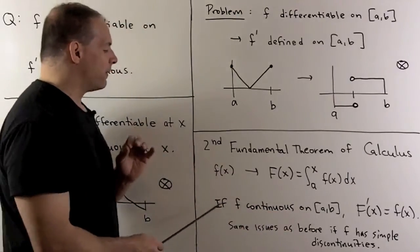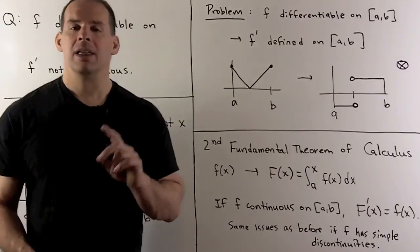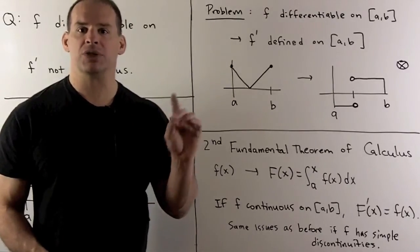Now, if our function f is continuous on the closed interval [a,b], then the derivative of capital F is just going to be little f.